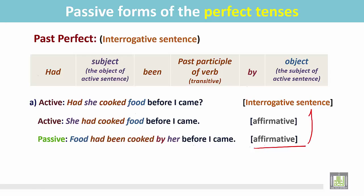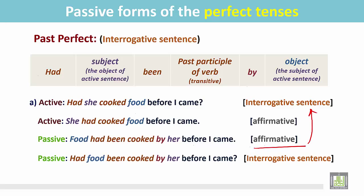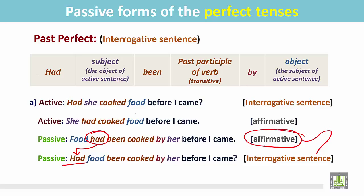Now change this affirmative sentence into an interrogative sentence. We place the verb 'to have' before the subject — 'had' — and the statement has been changed into an interrogative sentence in the passive: 'Had food been cooked by her before I came?'